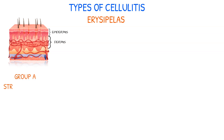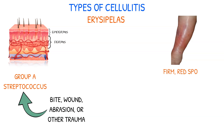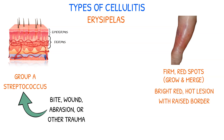Erysipelas usually develops when Group A streptococcus bacteria enter skin tissue through a bite, wound, abrasion, or other trauma. Initially, the affected area may present as firm red spots that gradually grow and merge, resulting in a clearly defined, advancing bright red hot lesion with a raised border. Additionally, vesicles may develop over the lesion and surrounding border.